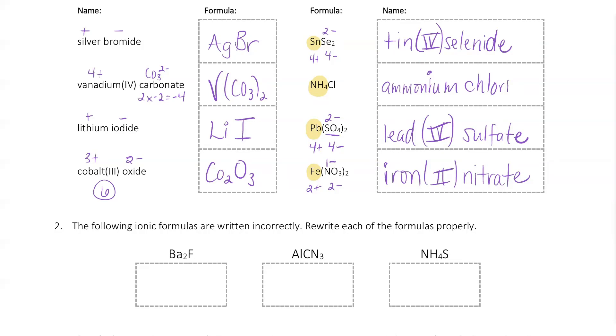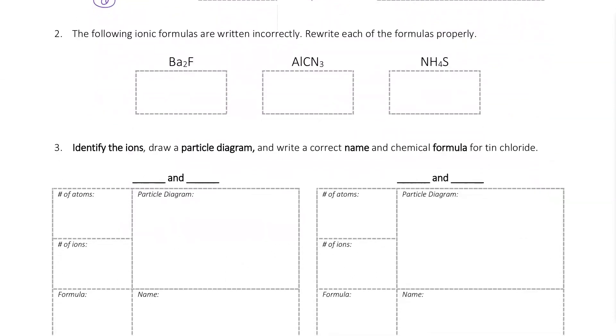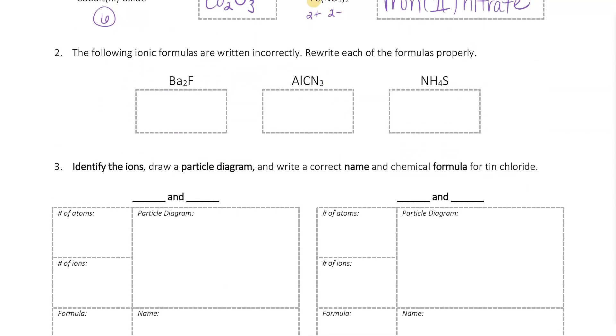The second section of this side of our assessment looks at incorrectly written ionic formulas. So we're going to correct these. These are all incorrect because they are not neutral as they are written. So what I want to do is start out by finding what the ion charges of each of these should be. The barium is going to be plus 2. Fluorine is going to be minus 1. So that's my issue right there. I don't need two bariums. I need two fluorines. So if I have one barium plus 2, I need two F minuses to make that neutral overall.